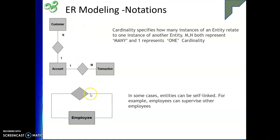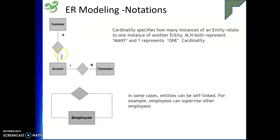If a relationship exists within the same entity itself — for example, an employee managing another employee — this is called a self-link, and it is represented by connecting the diamond back to the same entity on both sides. We can also have a three-way relationship connecting three entities with two types of relationships. We will see more details when we discuss relationships in the next session.